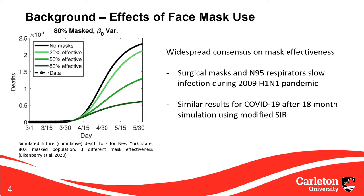Studies exploring the impact of face masks find widespread consensus that masks assist in diminishing the spread of airborne viruses. Specifically, surgical masks and N95 respirators have been shown to decrease infection rates of the H1N1 virus during the 2009 pandemic. More recently, a simulation of 18 months of an epidemic using a modified SIR model found that increased mask use significantly decreases viral spread. Looking at the graph, we can see that with 80% of New York's population masked, each colored line represents cumulative deaths over time at a certain mask effectiveness, showing a significant drop compared to no masks.